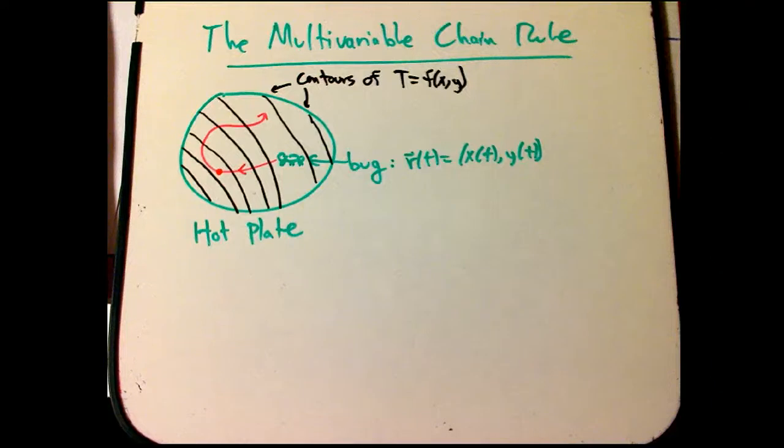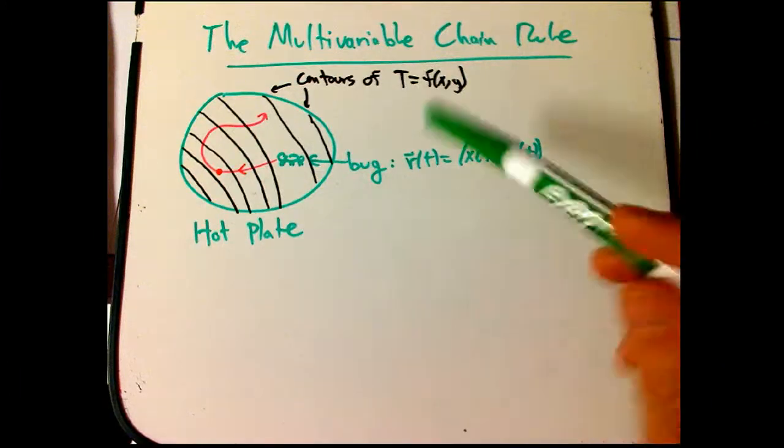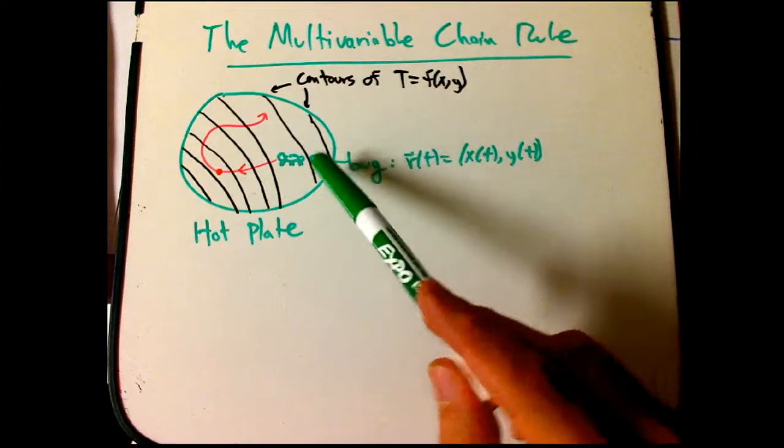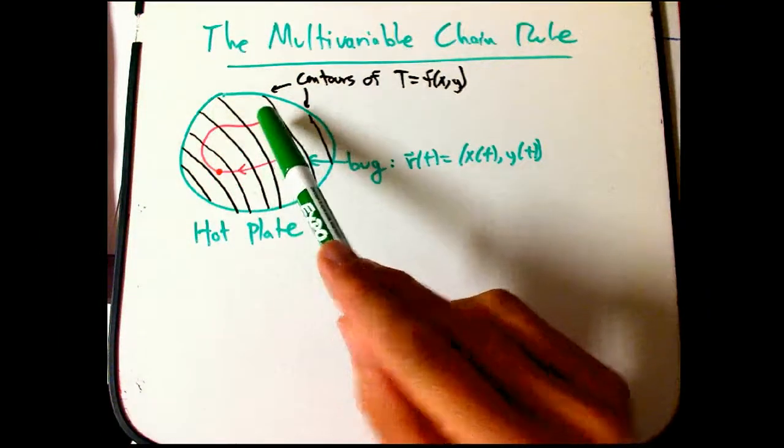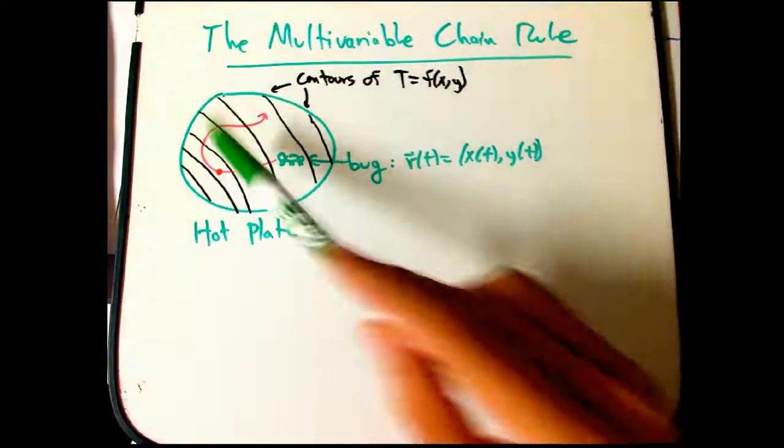Here's a little bit of an introduction to the multivariable chain rule. I like to think of this in terms of a physical example to start out. We've got a bug that's crawling on a hot plate that has variable temperatures.